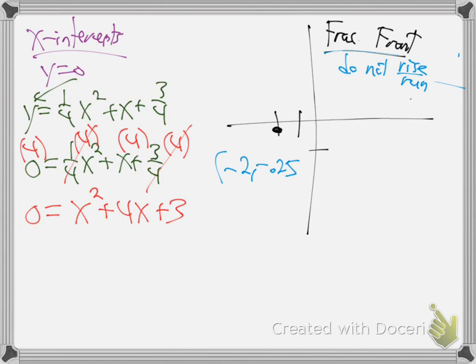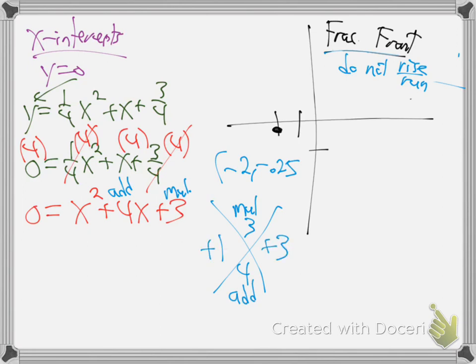Let's do number 7: y equals x squared plus 4x plus 8. Same thing - let's find the center. Start by finding the center: x equals negative b over 2a. So negative b, what's b? 4. Over 2a, a is 1. So that's negative 2. X is negative 2. So we've got our x value.